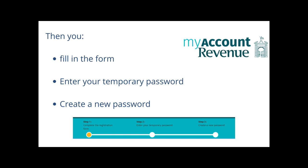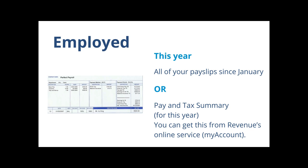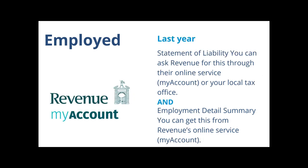You can then use the temporary password to get into your new account, but you'll need to create a new password, and you're all set up with your own online Revenue account. If you are employed, there is some information from this year you will need and some from last year. From this year, you need to provide all of your payslips since January, or a pay and tax summary for this year — you can get this from the Revenue's online service, My Account. From last year, you need a statement of liability and an employment detail summary, both available from Revenue's My Account.